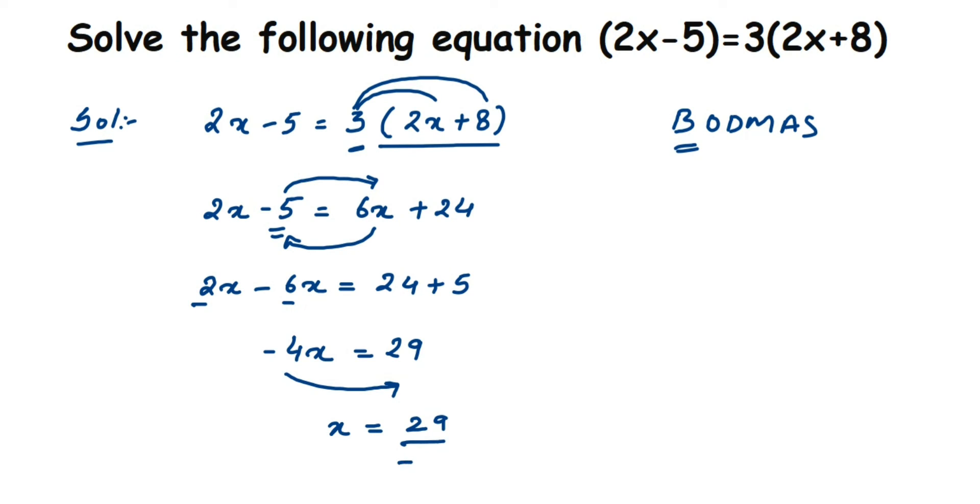So x will be equal to 29 upon minus 4. You cannot cancel this number because 29 and 4 are not divisible—they don't have a common factor. So we cannot cancel this number. We're going to leave the answer here. So the answer will be 29 upon minus 4, or you can write down minus 29 upon 4.